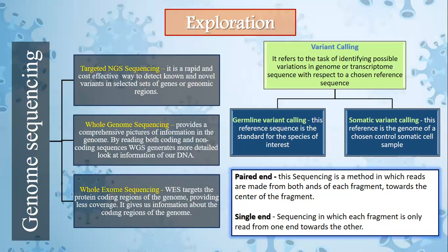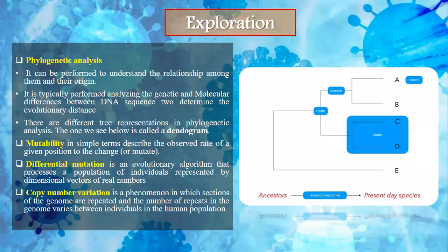There are two methods by which the sequence is read. One is paired-end sequencing, a method in which reads are made from both ends of each fragment towards the center. Single-end sequencing reads each fragment from only one end towards the other end. Then we studied phylogenetic analysis, which can be performed to understand the relationships among sequences and their origin. It is typically performed by analyzing genetic and molecular differences between DNA sequences to determine evolutionary distance.